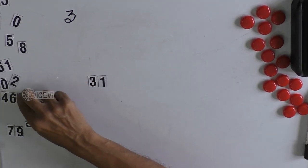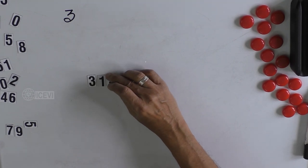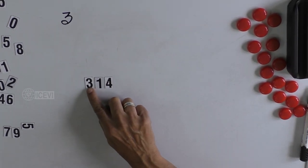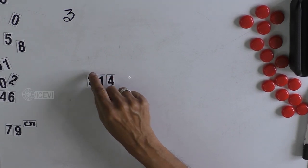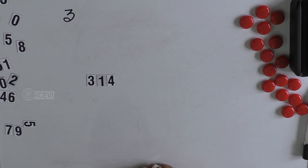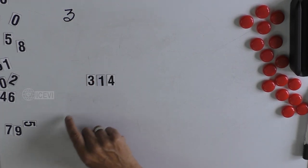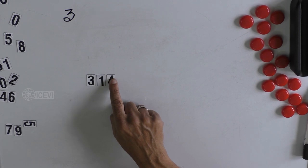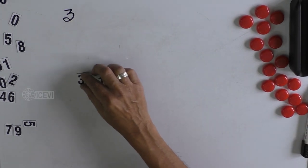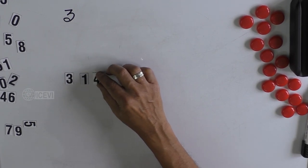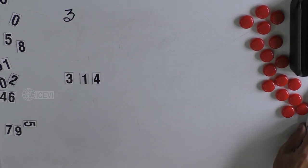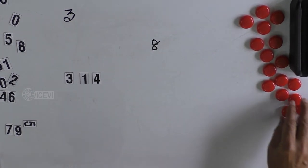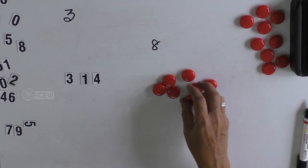In the case of number 3, let us start with an example. Let us say 3, 1, and 4. We have to find out whether this number 314 is divisible by 3. These numbers have Braille markings, so it will help as a good reference for blind children. In the case of the digit 3, what we have to do is add all the digits of the number. Here, 3, 1, and 4 — so you add them: 3 plus 1 is 4.